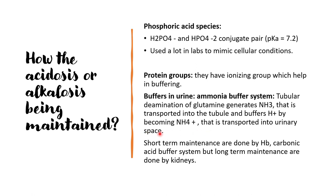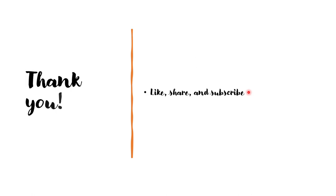Short-term pH maintenance is done by the hemoglobin or carbonic acid buffer system, while long-term maintenance is done by the kidneys. In the short term, excessive breathing or hypoventilation can also help in maintaining against acidosis or alkalosis. I hope you liked this video — please stay tuned for more videos, and thank you for your patience.